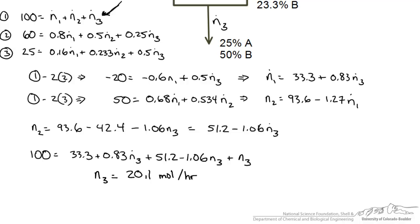Now we plug n3 into one of our equations, solve for n2 and I get 29.9 moles per hour and this means that n1 would be about 50 moles per hour.